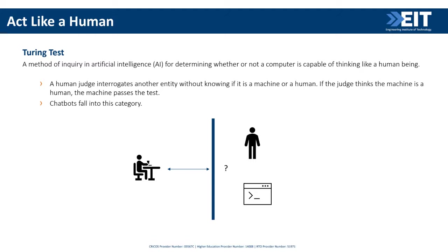An agent doesn't necessarily need a physical existence, though it can have one. The first test is: does it act like a human? We call this the Turing Test — a famous test where a human judge communicates with an agent without knowing if it's a human or a machine. If the agent tricks the judge into not knowing it's a machine, it passes the Turing Test. This gauges intelligence by how well the agent acts like a human.